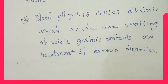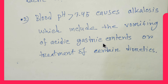Blood pH less than 7.45 causes alkalosis, which includes the vomiting of acidic gastric contents or treatment of certain diabetes. Thank you for viewing this video.